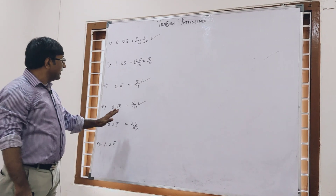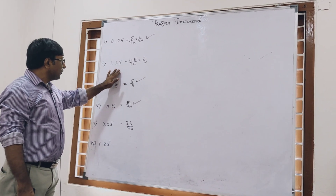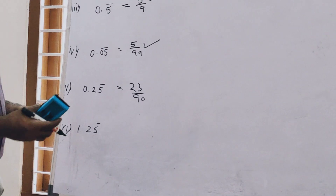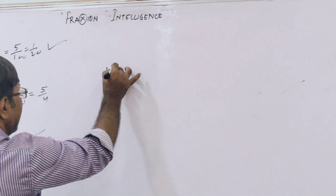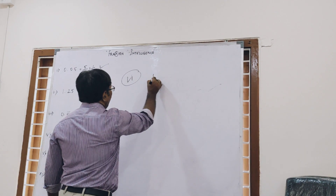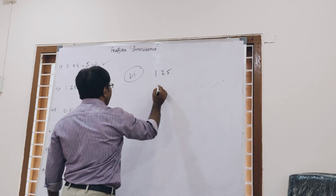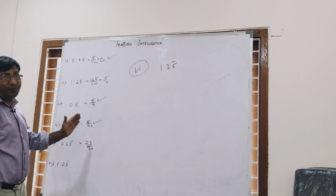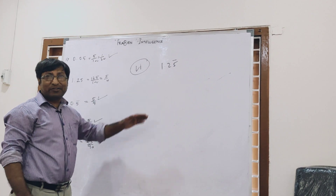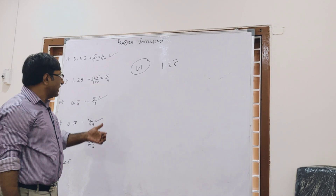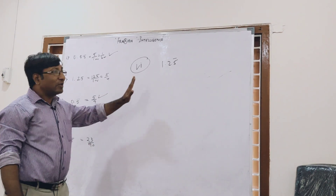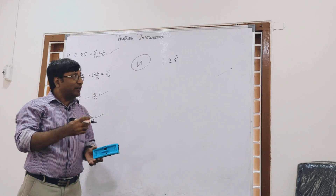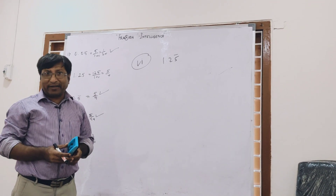So you have seen the first, second, third, fourth, and fifth questions. Now there is a sixth question: 1.25 bar with 5 having a bar. You have understood all five questions with different techniques. Now you can solve this sixth question very easily by applying the same technique. This is homework for you — solve this question and comment your correct answer. And please subscribe to my channel. Thank you.